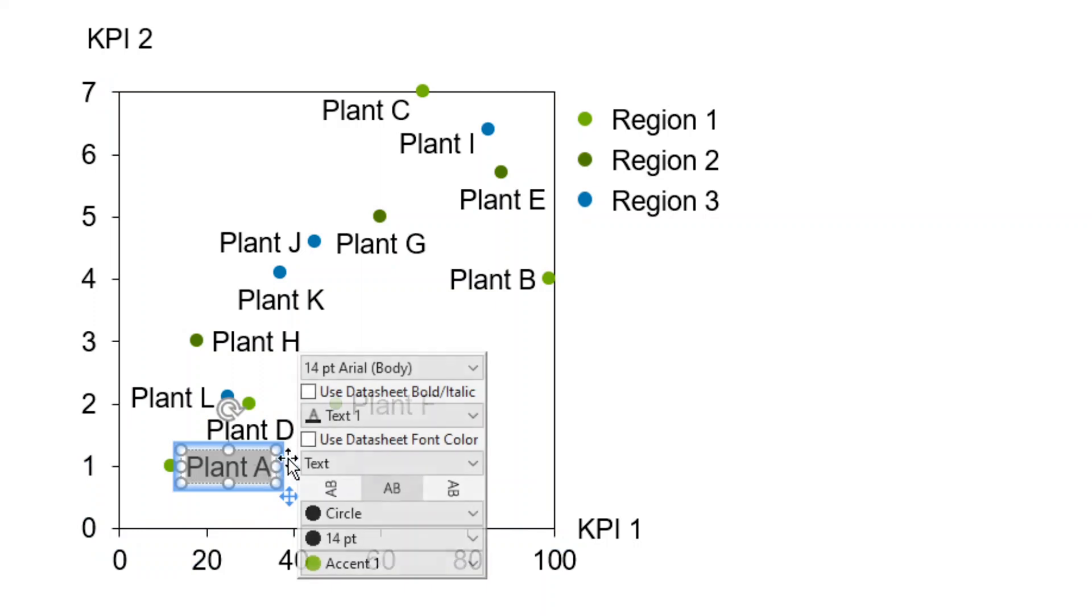Left-click on the label to open the label content control and choose between displaying text or the values for X, Y, or both.